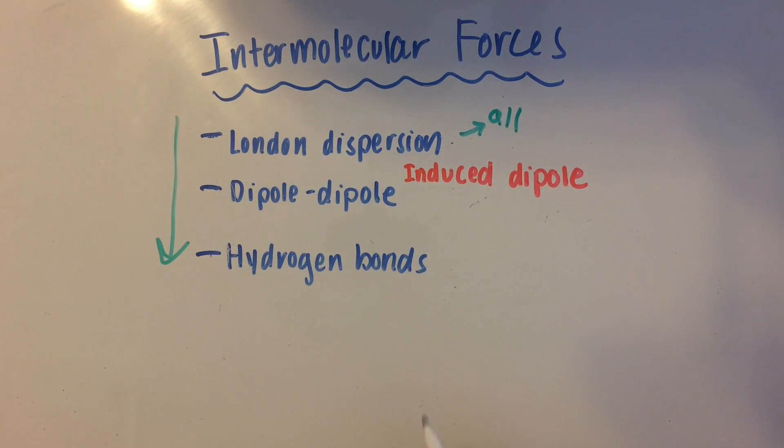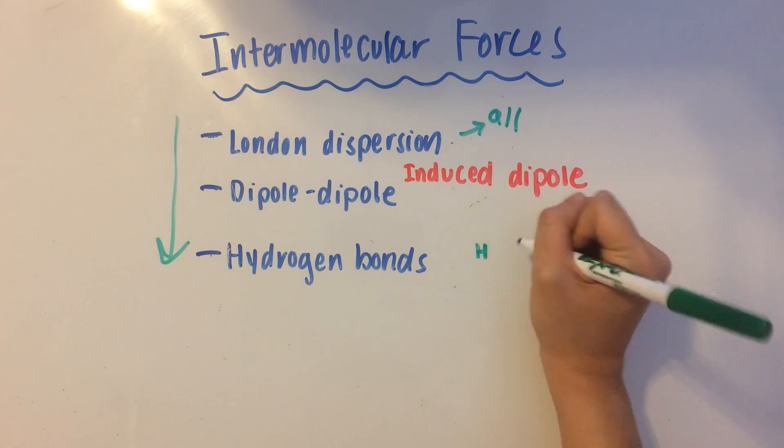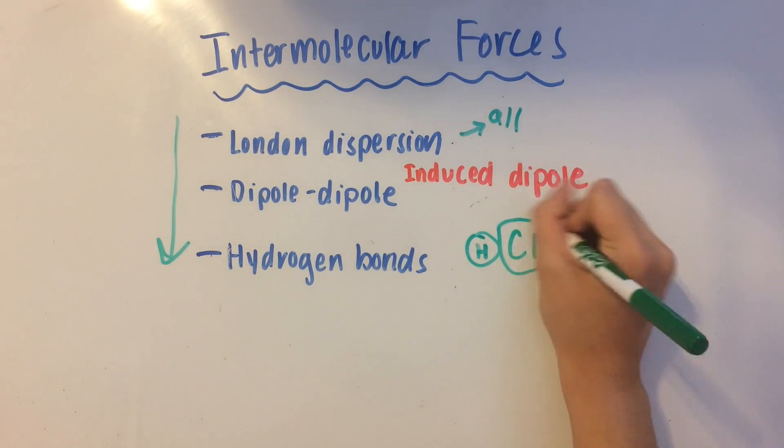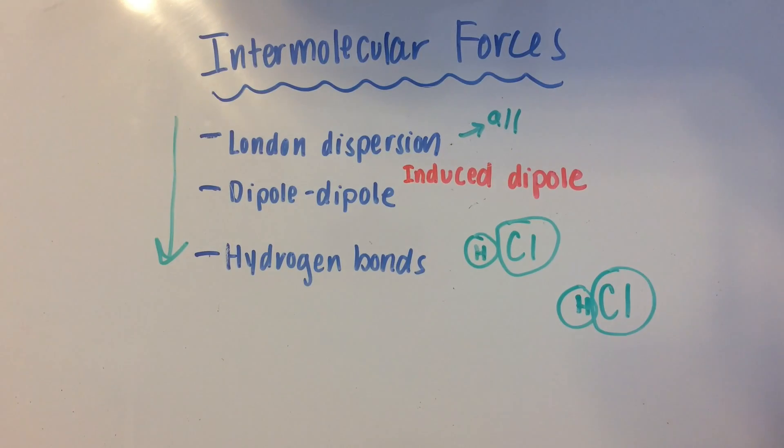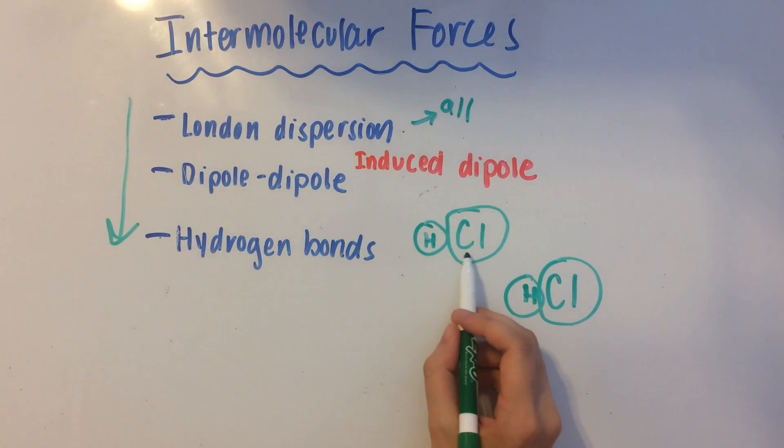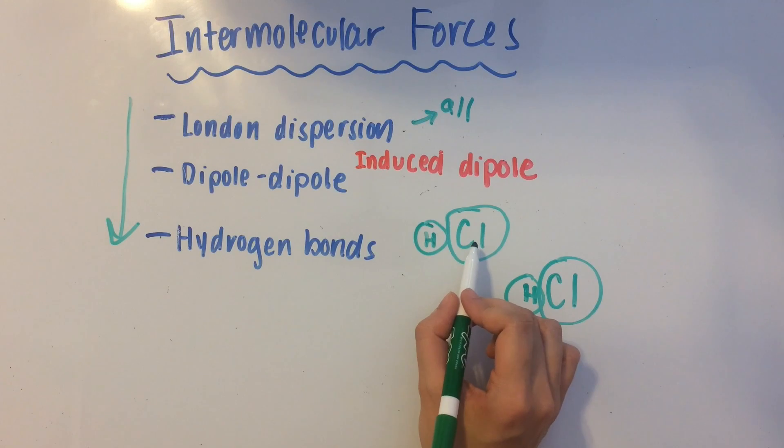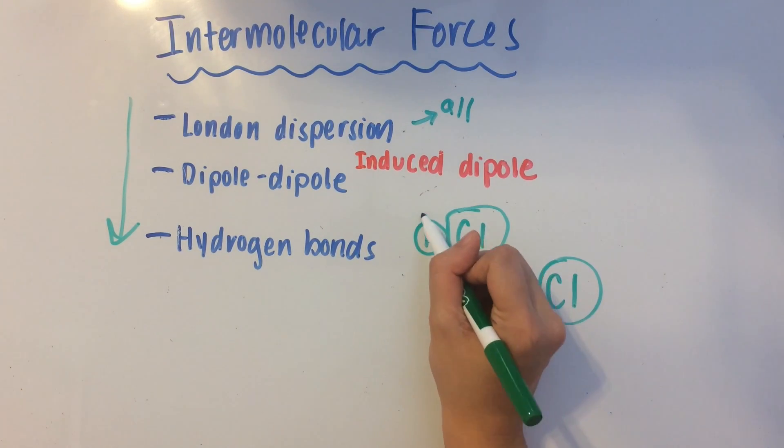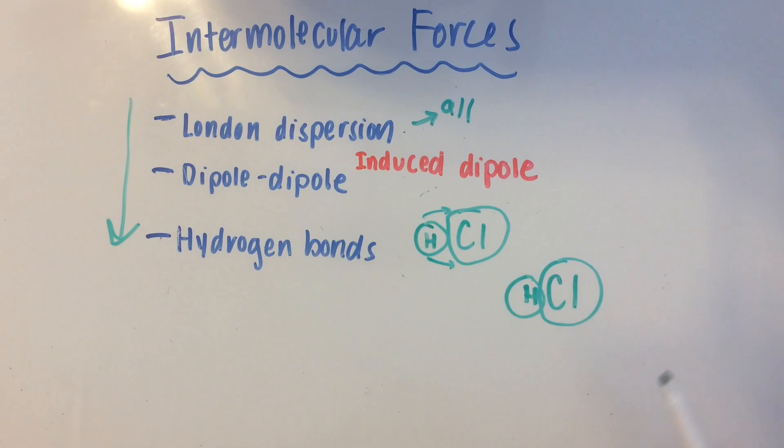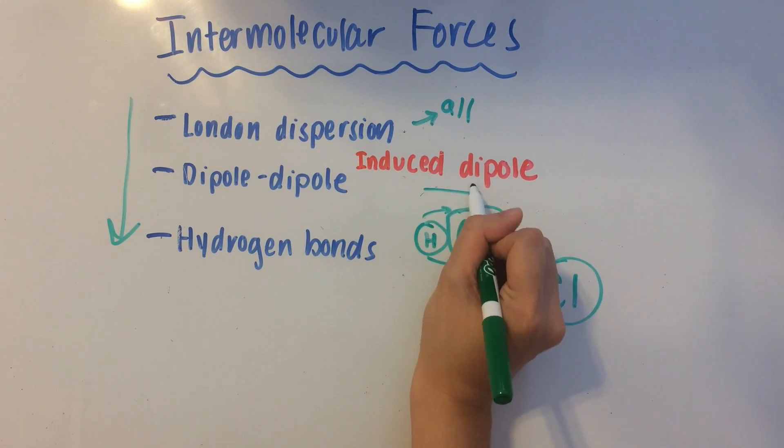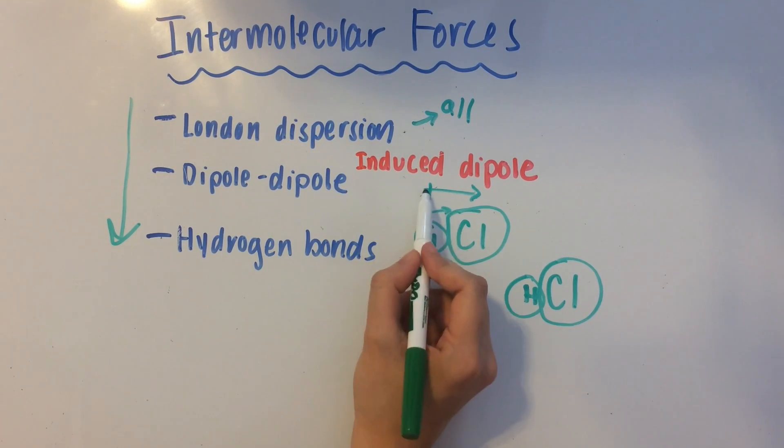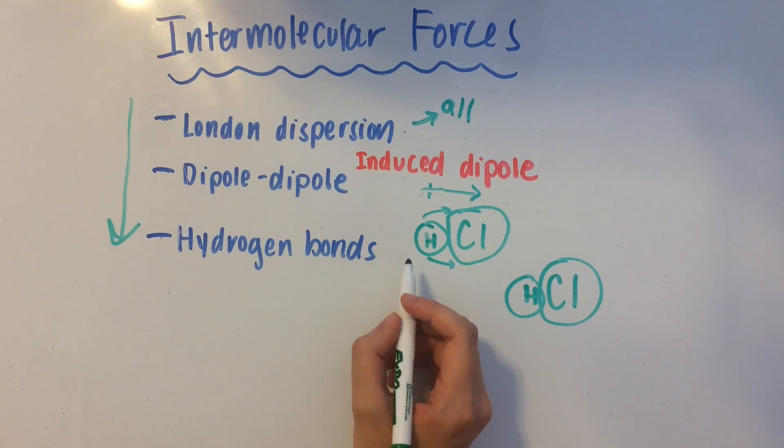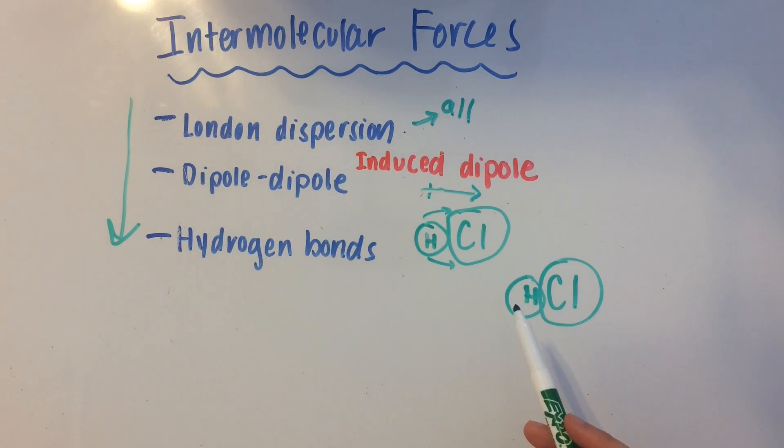Now we have dipole-dipole interactions. An example of this would be an HCl molecule and another HCl molecule. So chlorine is a more electronegative atom than hydrogen, so it's going to be pulling the electrons from hydrogen closer to itself. To denote this, we use an arrow showing the flow of electrons, and we put a little cross to show where the partial positive charge is at. So hydrogen is the partial positive charge, and chlorine has a partial negative charge.